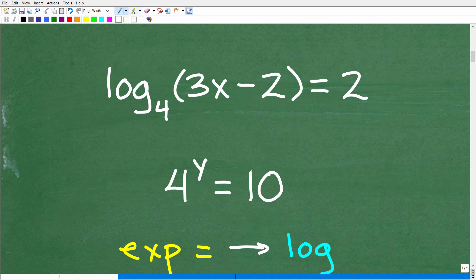Here again is our problem. We have log, L-O-G, which stands for logarithm, base 4, 3x minus 2 equals 2. Before we get into this problem, which is a logarithmic equation, let's take a look at its cousin, a related problem, which is an exponential equation.